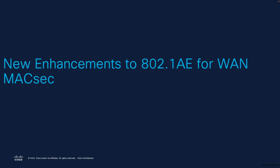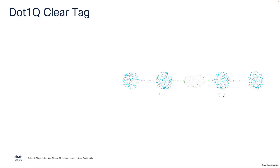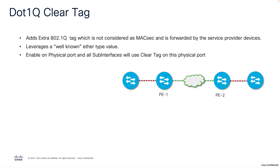Now we'll talk about enhancements brought into 802.1AE for WAN MACsec. The first enhancement is the 802.1Q clear tag, which allows an additional 802.1Q VLAN tag to be added to the packet without triggering encryption on that tag. This means the VLAN tag can be sent in clear or unencrypted form, enabling service provider equipment to read and handle VLAN-tagged frames without decrypting the entire data packet.